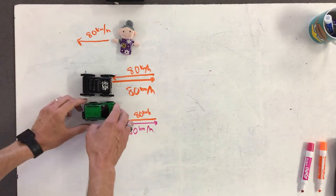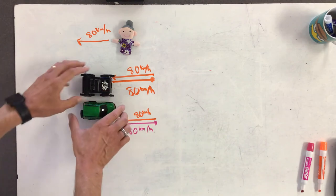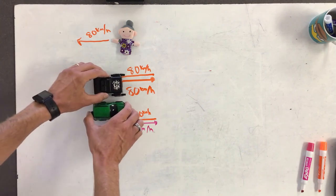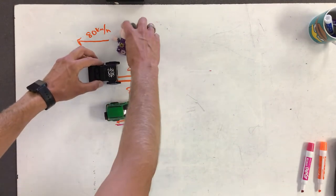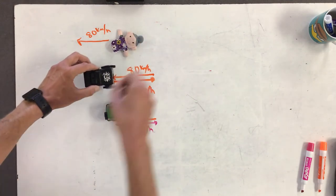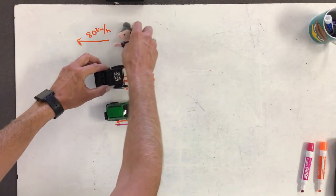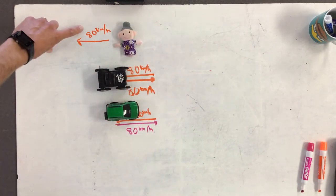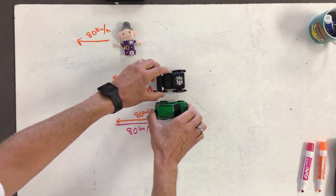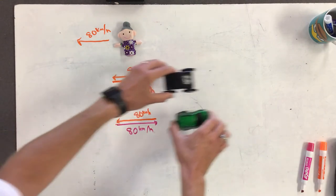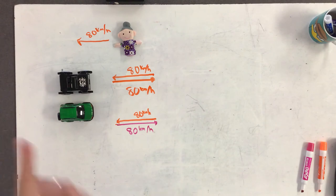If the cars were close enough together, someone in the green car could reach out and touch the other car without hurting their hand, because relative to each other, they're not moving. Marie wouldn't want to reach out and touch the car because relative to the car, Marie's going backwards at 80—that would hurt her hand. But if they're going the same speed, then relative to each other, the distance between them isn't changing, so we say they're not moving relative to each other.